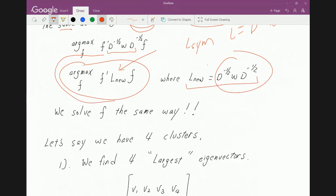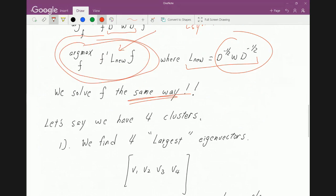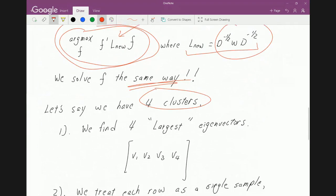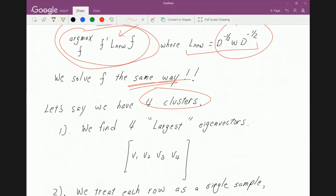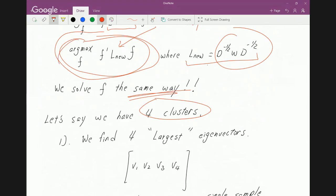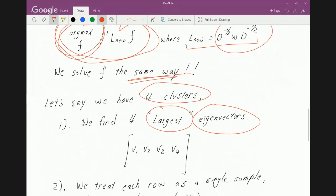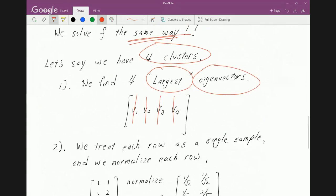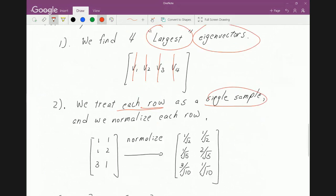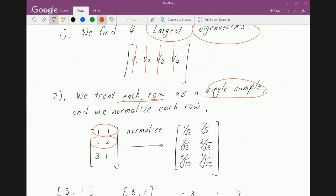So anyways, now we solve the rest of the problem exactly the same way. Well, let's say we have like four clusters. We would, instead of finding the minimum, now we're doing the max. We're doing that maximum eigenvector. So here's max 1, max 2, max 3, max 4. And then we treat each row as a single sample exactly the same way, each sample, except that you want to also normalize that.